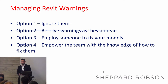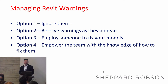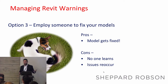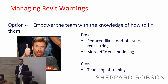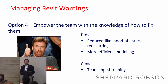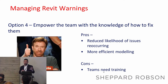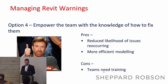Option three — having someone clean up models — isn't ideal either, though time constraints sometimes mean models need cleaning at the end of stages. Option four is definitely the preferred approach. With option three, the model gets fixed, but because no one is learning how the issues arise, they tend to occur again and again. Training your team to resolve issues themselves reduces the likelihood of recurrence and ensures the model maintains optimum efficiency throughout the project.